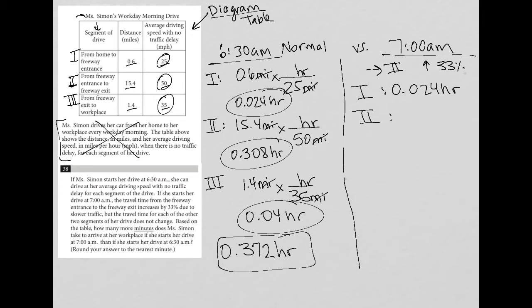So phase two is 0.308 times—how do I write 33% increase? A 33% increase means increasing 100% by 33%, which means you'll have 133%.